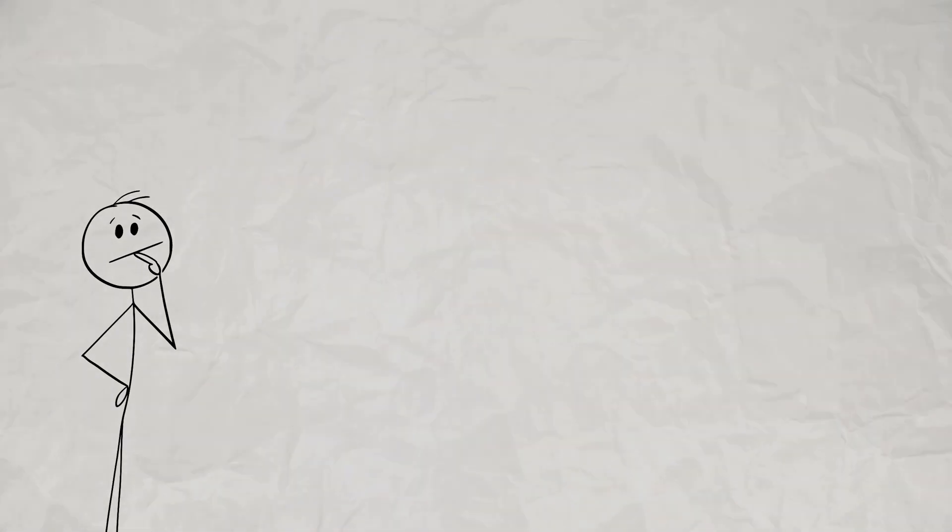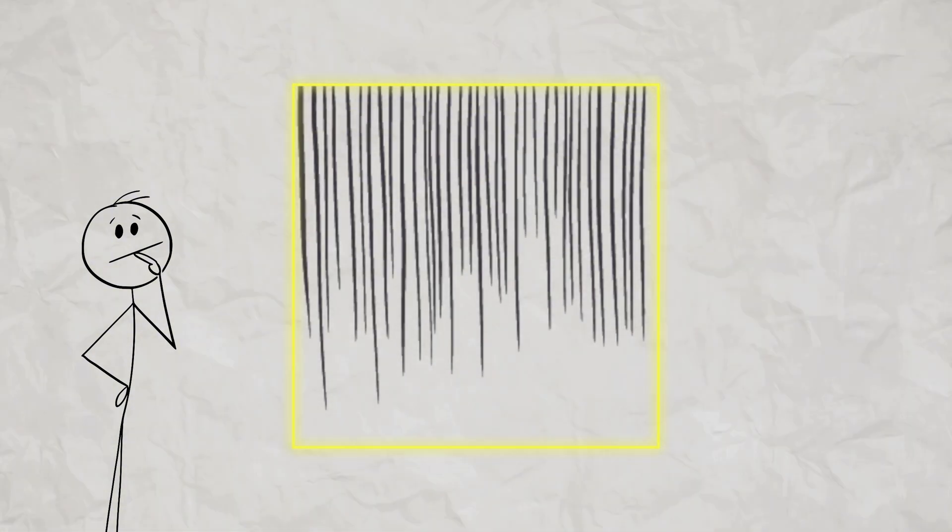Vantablack isn't a paint. It's a collection of vertically aligned carbon nanotubes. When light hits it, instead of reflecting back to your eyes, the light gets trapped between these nanotubes, bouncing around until it dissipates as heat.